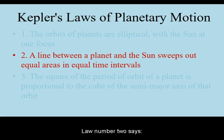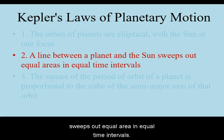Law number two says that a line drawn between a planet and the Sun sweeps out equal areas in equal time intervals.